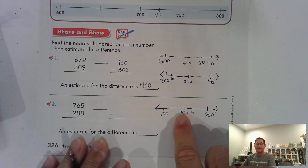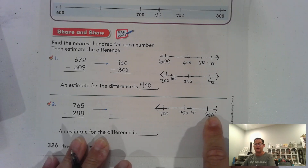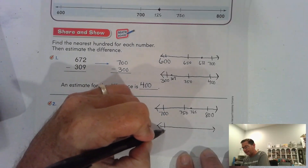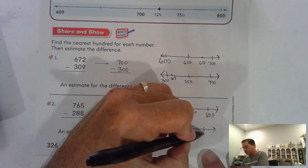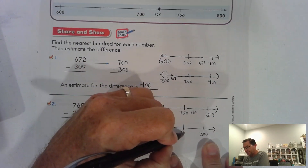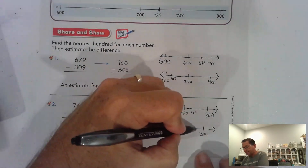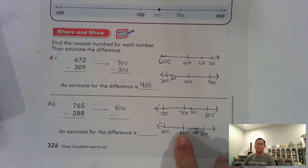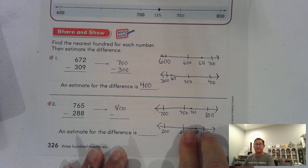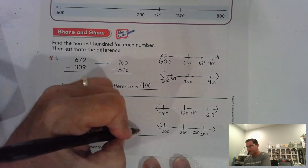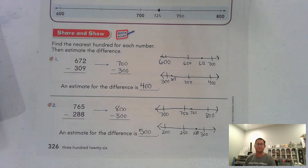It's past 750 so as it goes to 800, it's closer to 800 than it is to 700. 288 — it's past 200 but has not reached 300. Exactly in between 200 and 300 is 250. 288 is to the right of 250, so anything to the right of the midpoint goes to the larger hundred. 800 minus 300 is 500.